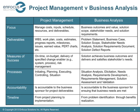Let's contrast a project management focus from a business analysis focus. Project management focuses on managing cost, inputs, schedules, resources, and deliverables. Business analysis focuses on business outcomes, stakeholder needs, and solution requirements. Both have deliverables: PM deliverables include status reports, project plans, and work breakdown structures; BA deliverables include problem statements, business cases, solution scope, and stakeholder needs. Measures of success also differ — PM measures whether a project is on time, on budget, and delivered all scope; BA looks at whether the solution achieved the business need and produced the expected business outcomes. Similar, but not exactly the same.